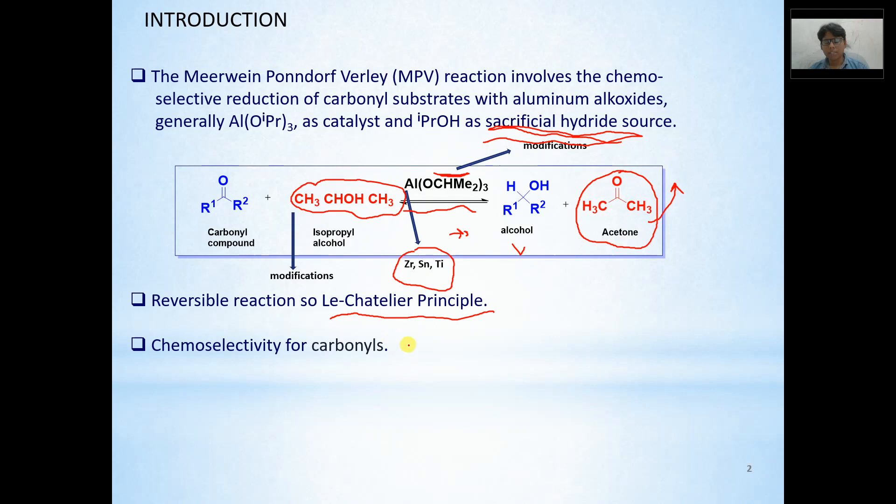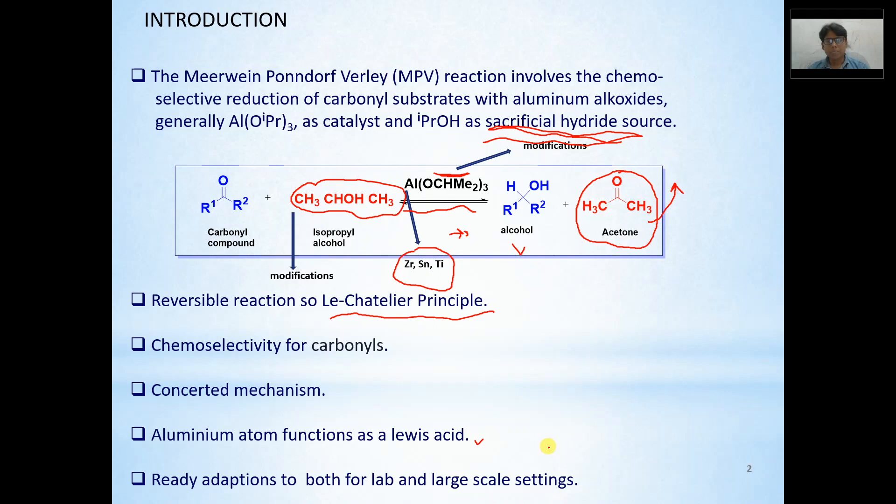The reaction is a concerted mechanism. What I mean by concerted is that the formation of one bond and breaking up of the other bond takes place simultaneously, and the details we will discuss in the mechanism. Aluminum functions as Lewis acid. Lewis acid is something that accepts the electron pair. This part also we will be looking at in the mechanism aspect. Then this is applicable for both lab settings as well as large scale settings. This is highly applicable method.